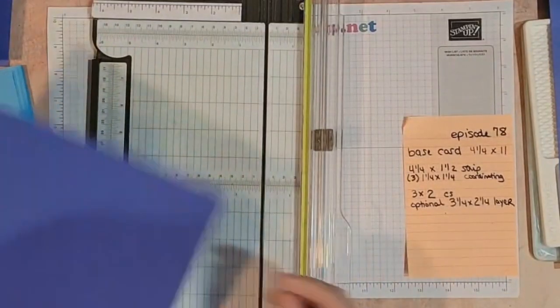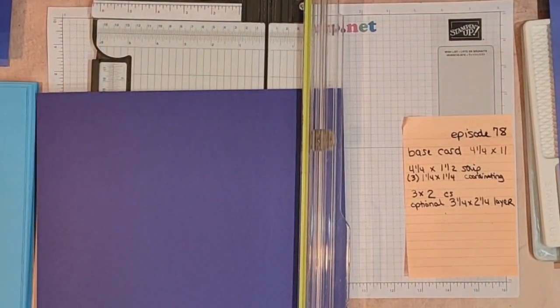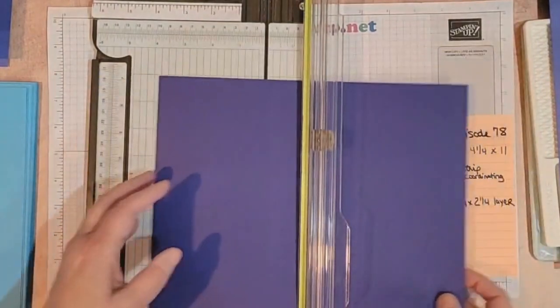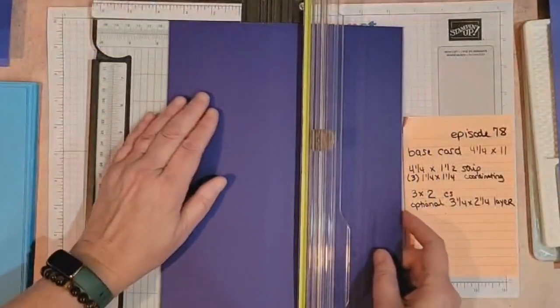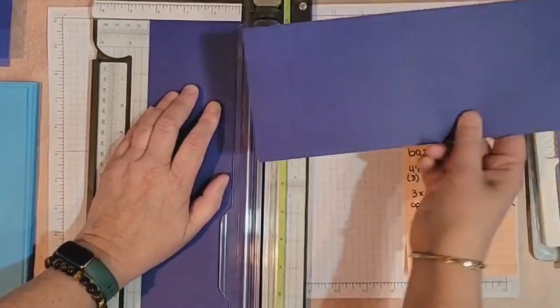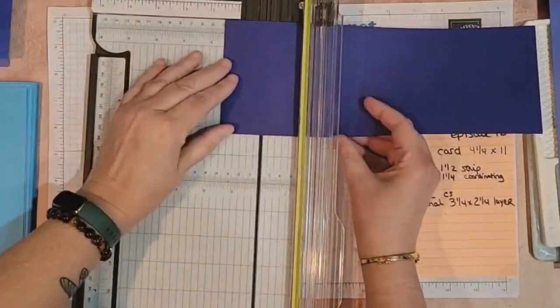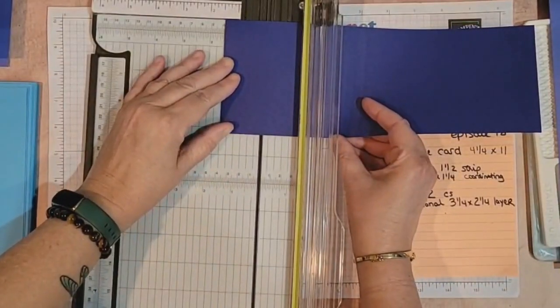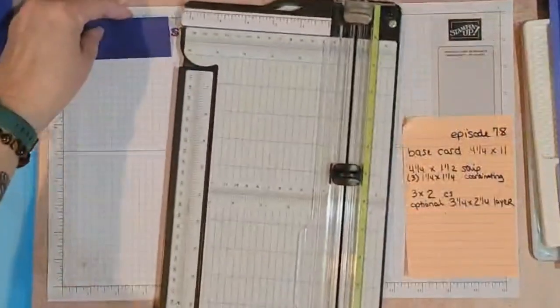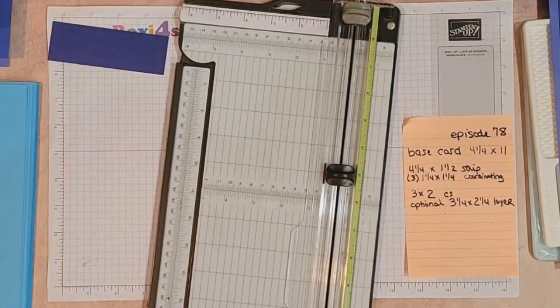I'm going to do a strip and yes I'm using a full sheet but you saw how much I had left so I don't mind using it. So here we're going to do four and a fourth by one and a half. So again I'm going to go and do this in half that way I have a card base. Put it over here in my little catch-all and then we're going to do three one and a fourth by one and a fourth coordinating.